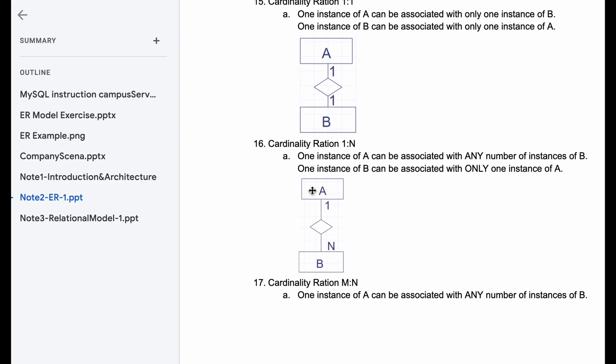Now I have cardinality ratio one-to-N, one-to-many. So one instance of A can be associated with any number of instances of B. One instance of B can be associated with only one instance of A. That means that A is one person, and they can have many employers. So this one person can work for many different companies.